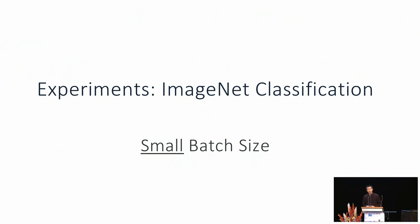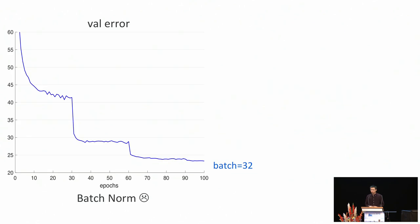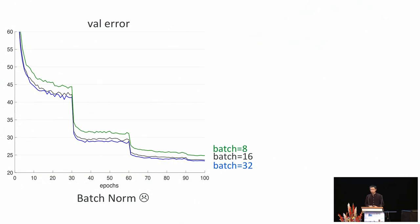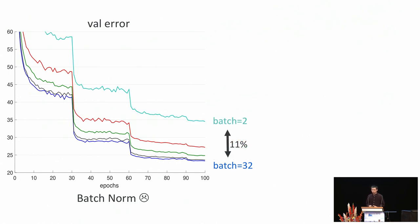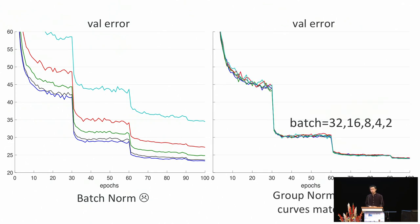We show experiments with the same ResNet model but smaller batch size. When we change the batch size, we also scale the learning rate linearly. Batch norm performs very well for a regular batch size; however, its error rate increases significantly when the batch size becomes smaller, ending up 11% worse when the batch size is 2. On the other hand, group norm is unaffected by the change of batch size, and it's surprising that the training curves for different batch sizes can even match each other. This shows the stability of group norm on small batch sizes.